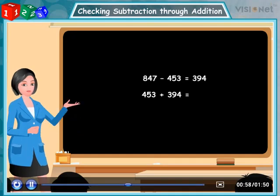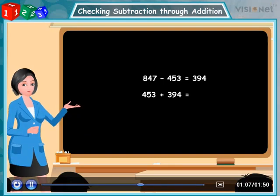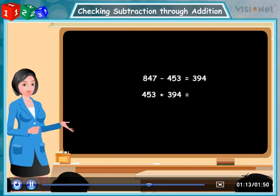We obtained the difference as 394, which is the smaller number between these two numbers. Yes, it is 453. Now add the smaller number with the difference. Like this.